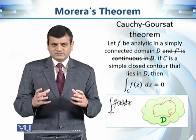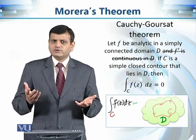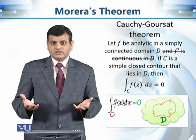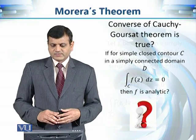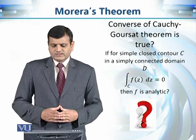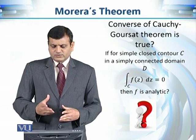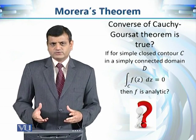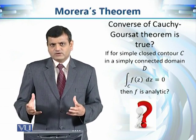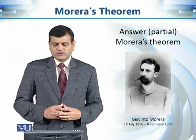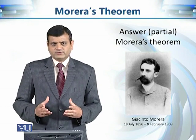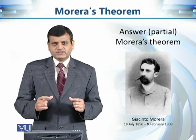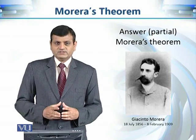Cauchy's Goursat theorem says that if a function is analytic, then the contour integral is equal to zero. The converse asks: if the contour integral is zero, is the function analytic? In short, if the contour integral of a function is zero — under the condition that we have a simple closed contour in a simply connected domain D — then whether the function is analytic or not. The partial answer to this question was given by Morera's theorem. It is a partial answer because he imposed some further conditions on the function.